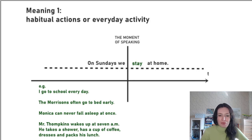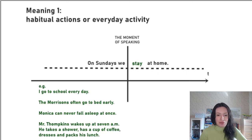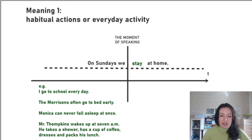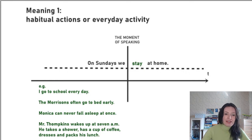The same thing can be observed in examples like: 'The Morrisons often go to bed early' — that's their tradition. Or 'Monica can never fall asleep at once' — never is also a regular action, every evening she has this problem. And then: 'Mr. Tompkins wakes up at 7am, takes a shower, has a cup of coffee, dresses, and packs his lunch.' This is his morning routine — every morning in the past, present, and future. This is the first meaning: habitual action and everyday activity.